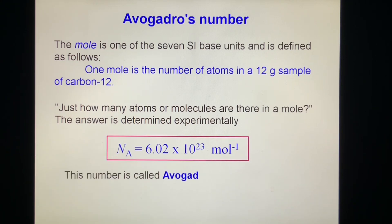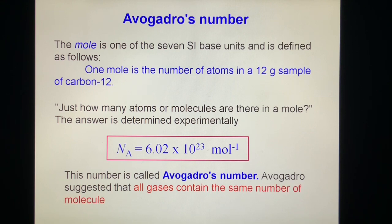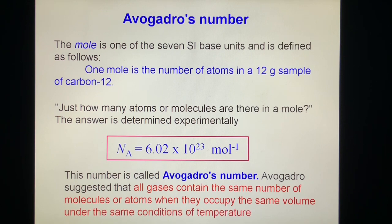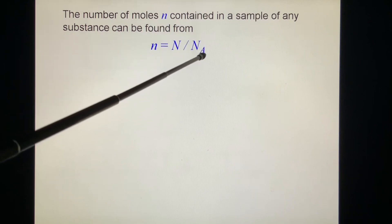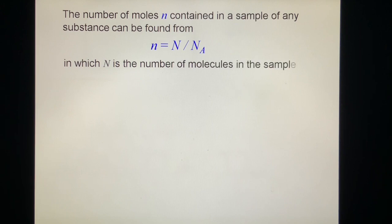This number is called Avogadro's number. Avogadro suggests that all gases contain the same number of molecules or atoms when they occupy the same volume under the same conditions of temperature and pressure. The number of moles n contained in a sample of any substance can be found from n equals N over NA, in which N is the number of molecules in the sample.